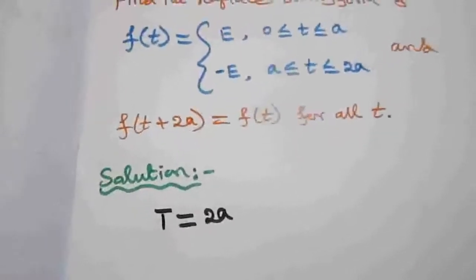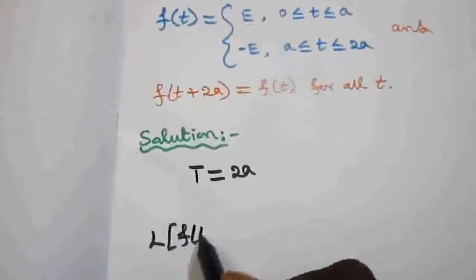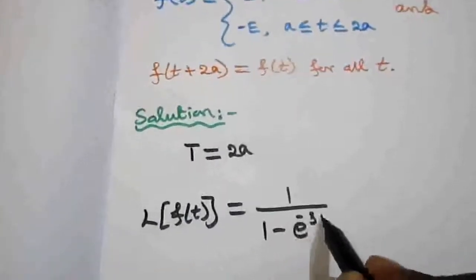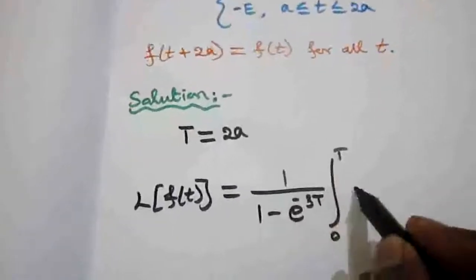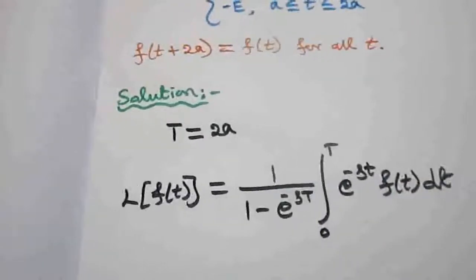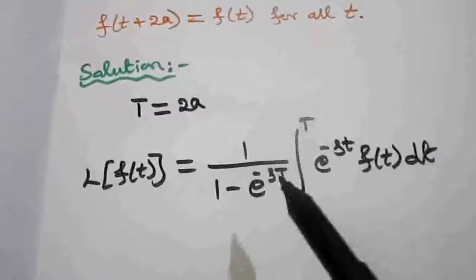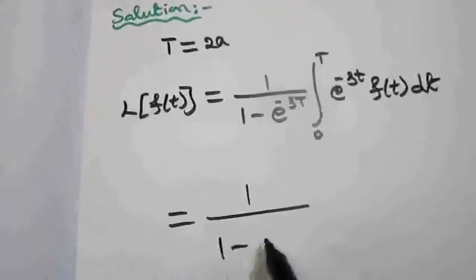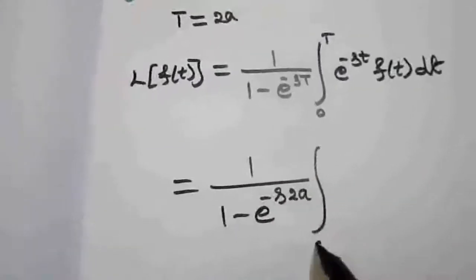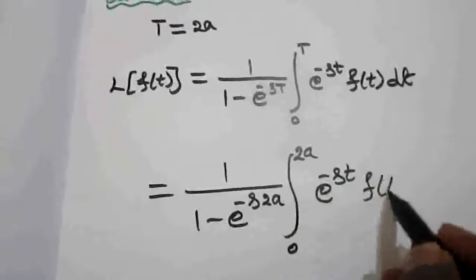We know the formula for the Laplace transform of a periodic function: L of f of t equals 1 by 1 minus e power minus sT, integral 0 to T of e power minus st f of t dt. Since capital T is 2a, we substitute T equals 2a to get: 1 by 1 minus e power minus 2as, integral 0 to 2a of e power minus st f of t dt.